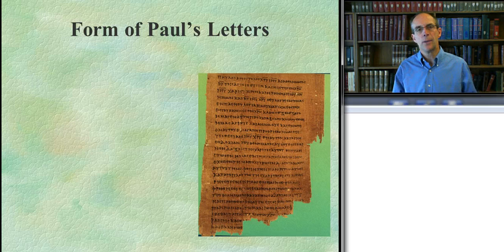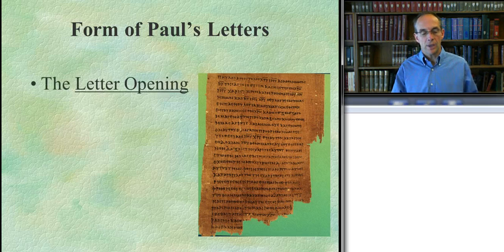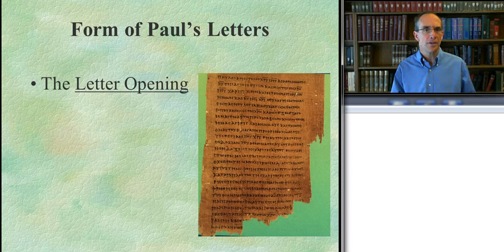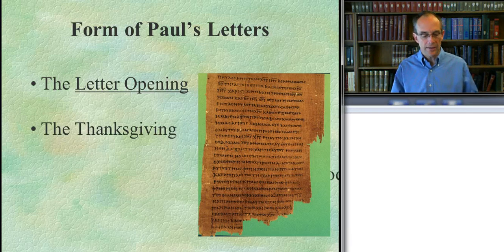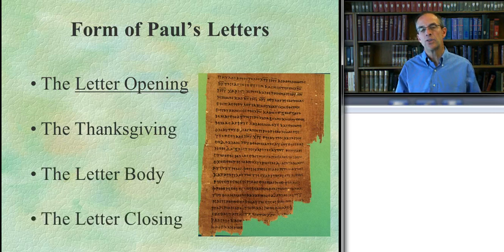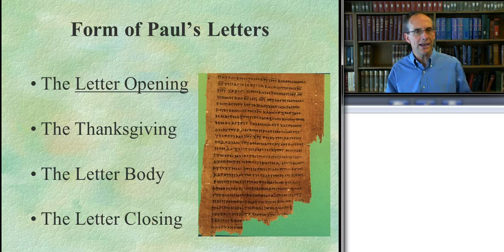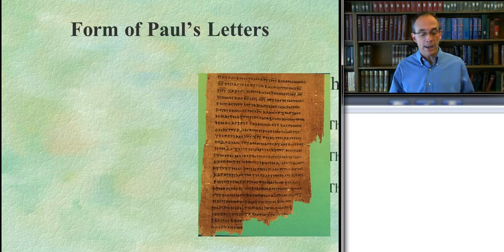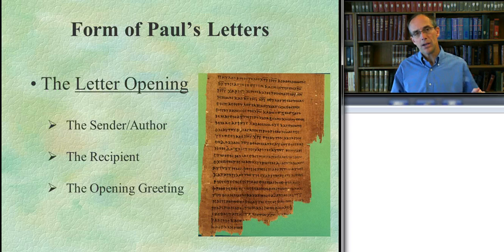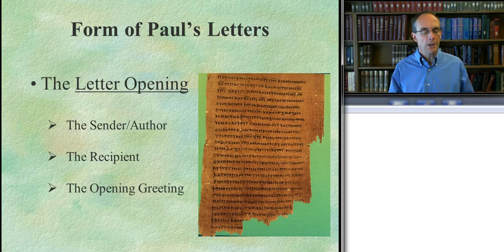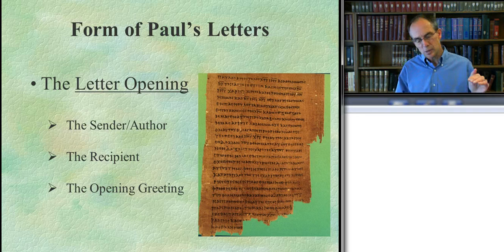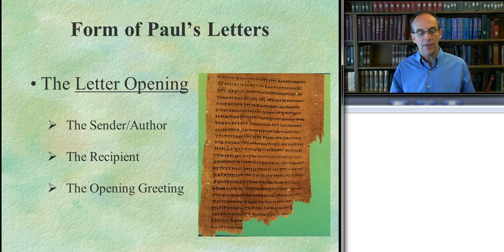We're going to start off with the first part of Paul's letters. You know from your reading that Paul's letters have four parts: the opening, the thanksgiving, the body, and the closing. We're going to start by looking at the letter opening, and within the letter opening, focus on three different parts: the sender or author unit, the recipient unit, and the opening greeting. Let's zoom in on the sender unit.